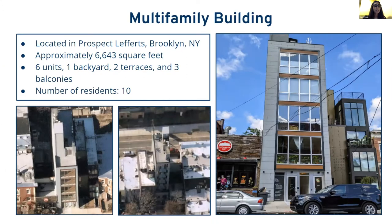The second representative dwelling is a multi-family building located in Prospect Lefferts, Brooklyn. It's approximately 6,643 square feet, with six units, one backyard, two terraces, and three balconies. The total number of occupants is 10 people, and the images show two aerials of the front and back of the building along with the front facade.